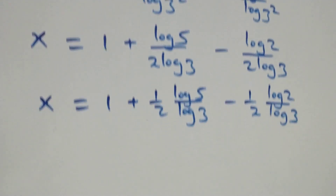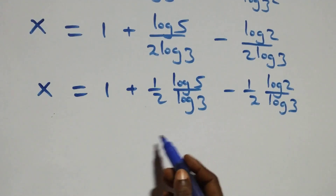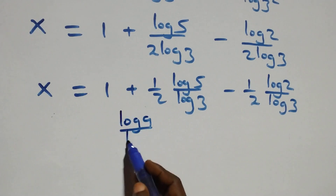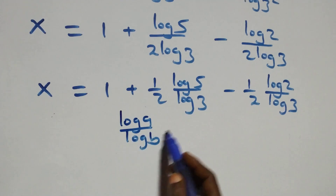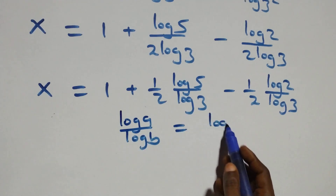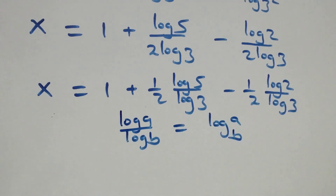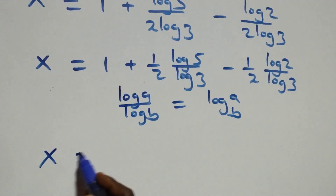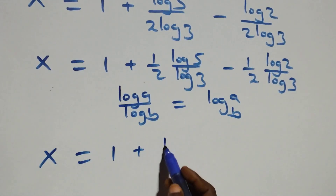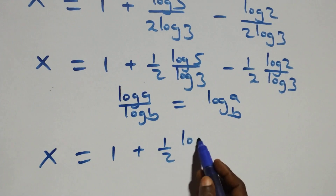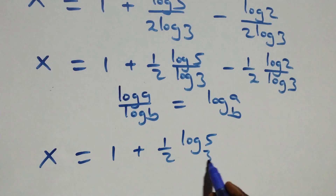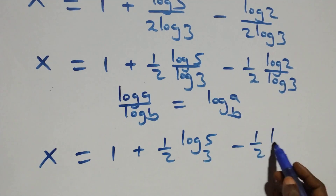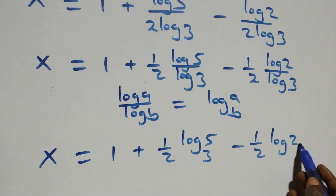The next step here, we apply the change of base formula. When we have log a over log b, this is the same thing as log a to base b. So what we have here becomes x equals to 1 plus (1/2)·log₃5 minus (1/2)·log₃2.